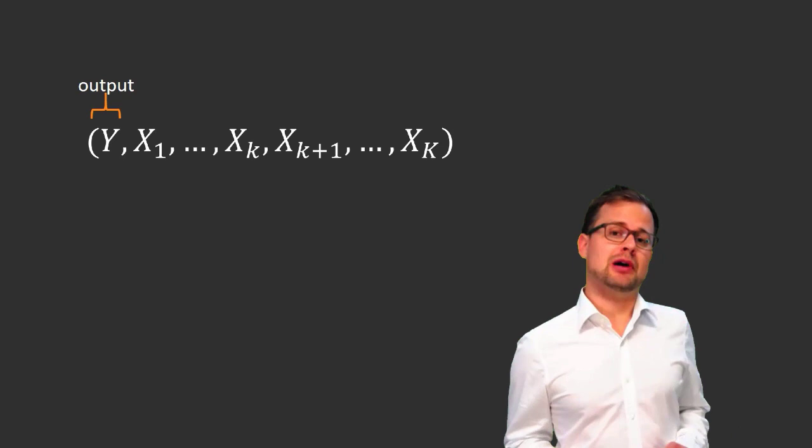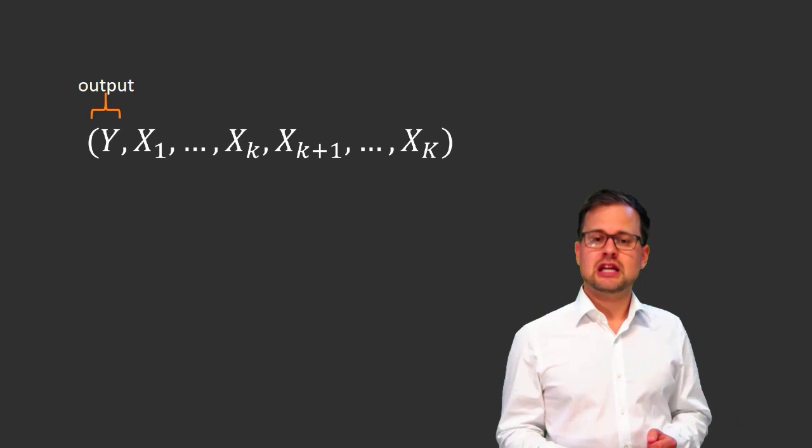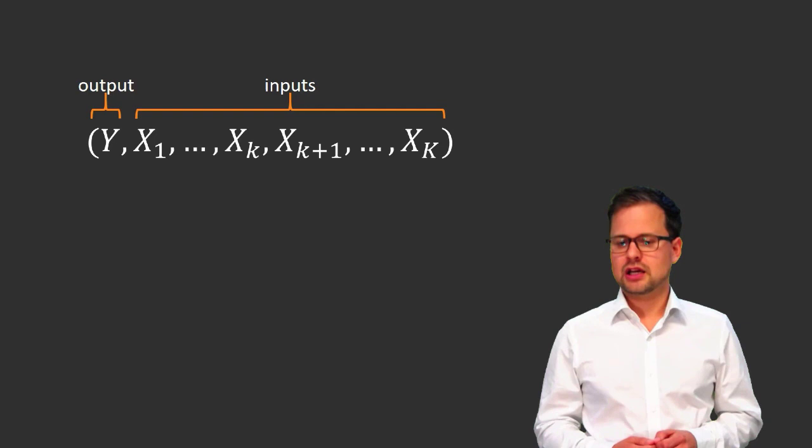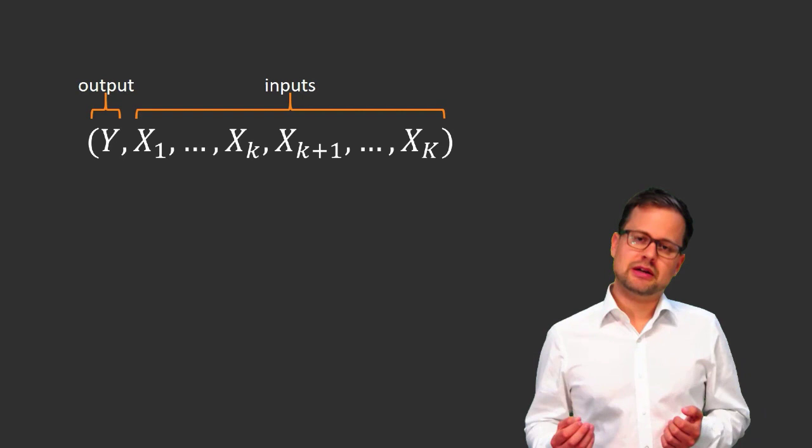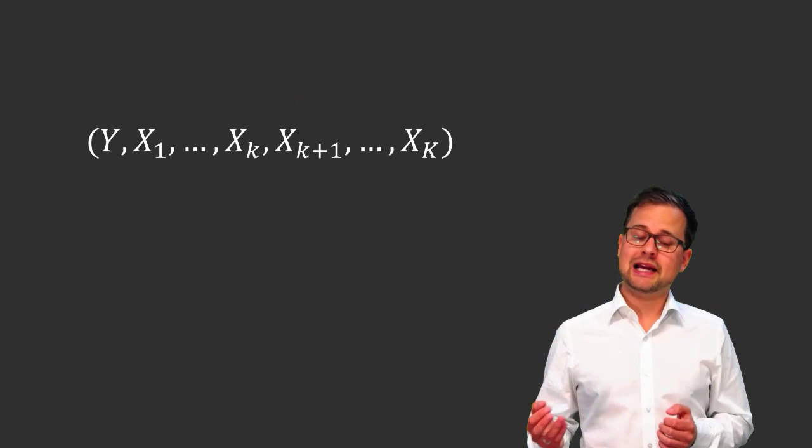An important assumption of the linear regression model is that all the inputs and the output are numbers. That is very convenient because it allows us to use random variables to describe the distribution of outputs and inputs in a population. The random variable y describes the distribution of the outputs in the population, and the random variables x-subscript give us the distribution of the various inputs. Rather than calling it output, we call y the outcome.